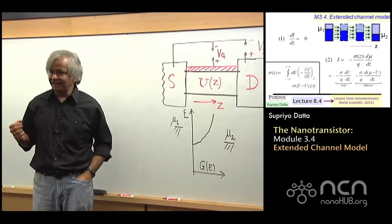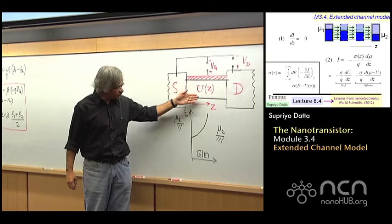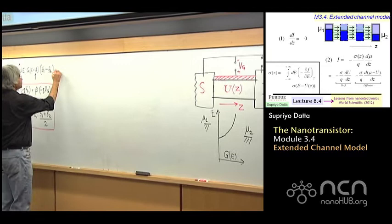And now if you do that, the equation gets a little more complicated. One of the nice things so far was that the equations were relatively straightforward — we didn't really have a differential equation. But once you take this variation along the channel into account, you'd need what you might call a differential equation. So let me show how that would come about.